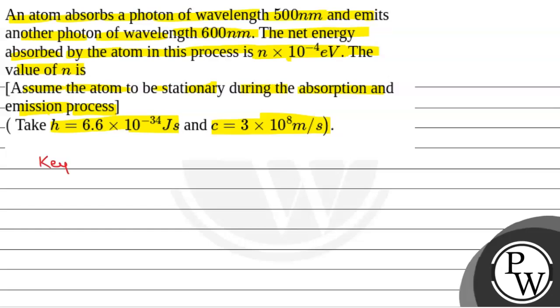First of all, we will see what will be the key concept within this question. The key concept will be energy E is equal to hc by lambda, where lambda is the wavelength. Now, the value of hc in electron volt nanometer is 1240 electron volt nanometer.